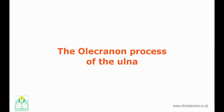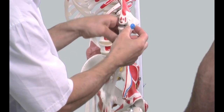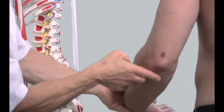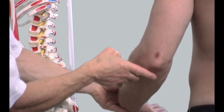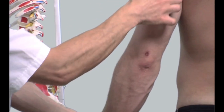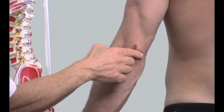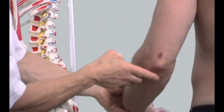The olecranon process of the ulna is the most proximal part of the ulna. In the anatomical position, the olecranon process faces directly posteriorly. It is a large, thick, curved bony eminence, convex posteriorly, upon which the triceps tendon is attached. It can be palpated in the posterior and medial aspect of the elbow joint during flexion and extension movements.